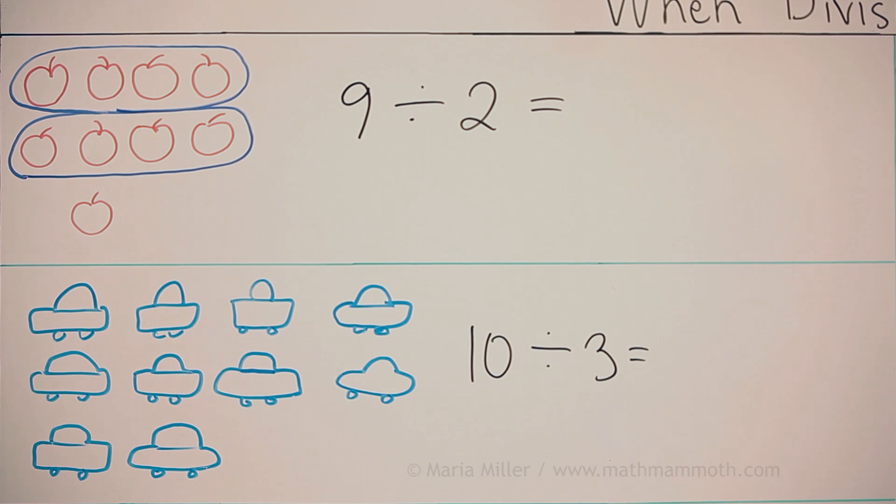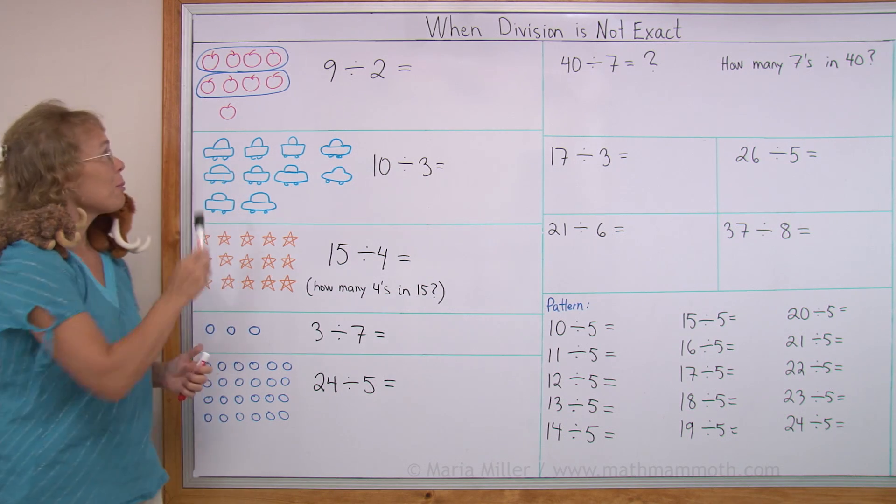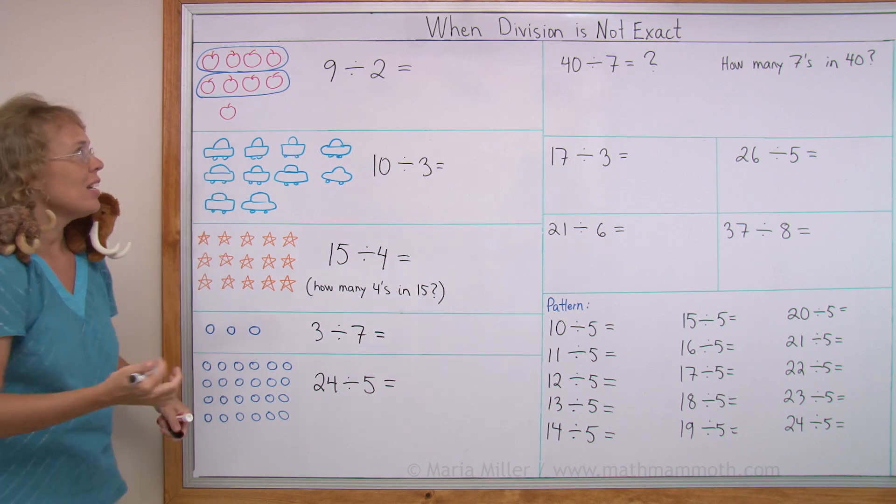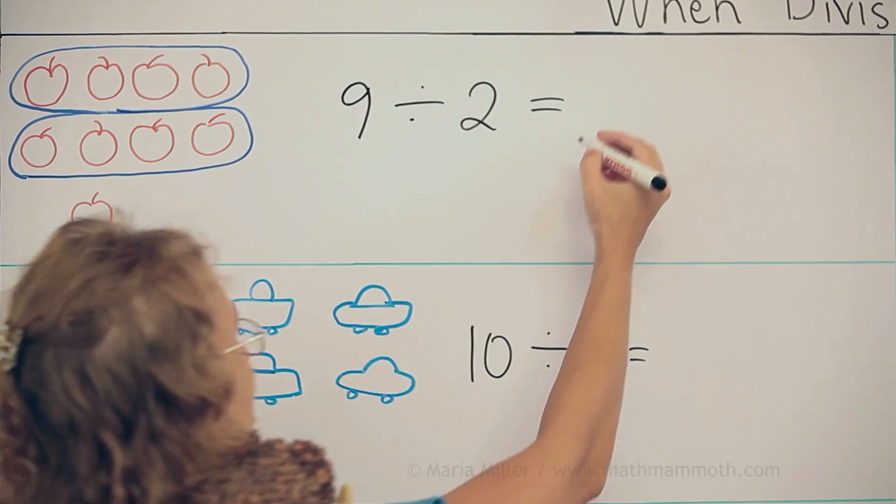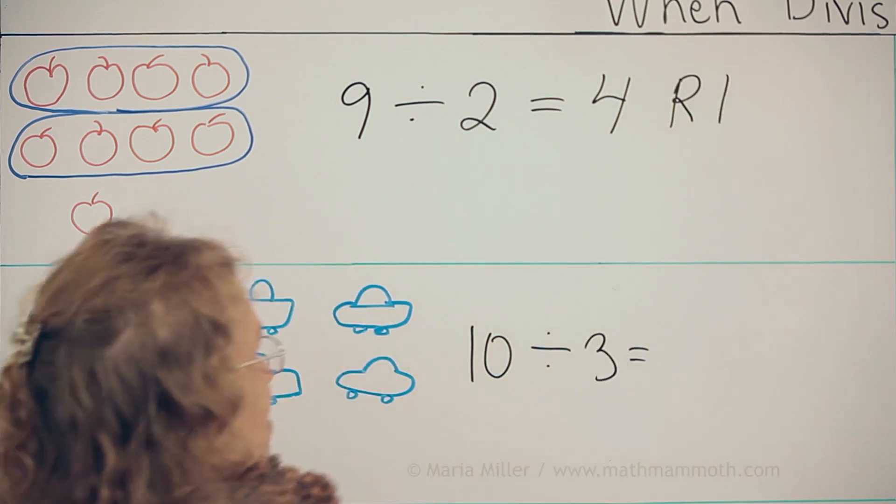For example, let's say we have nine apples for Mathi and Giganta to share. Then they cannot share evenly, right? Each mammoth would get four apples and there would be one left over. And we write it like this. The answer is four and then r or remainder is one.